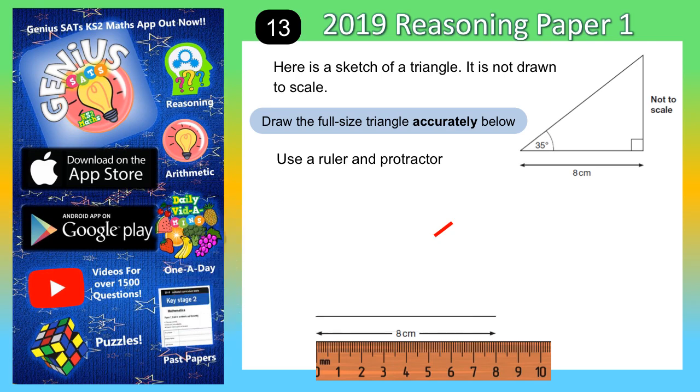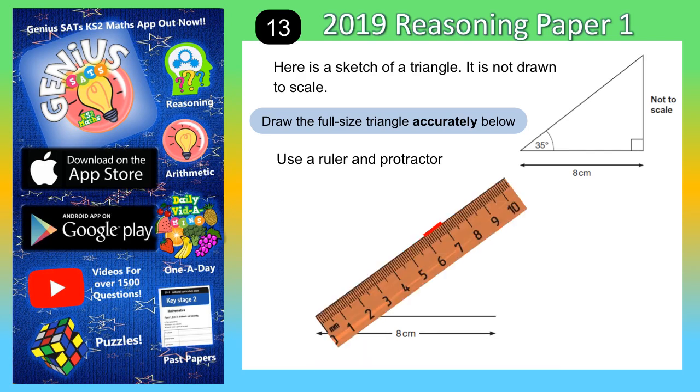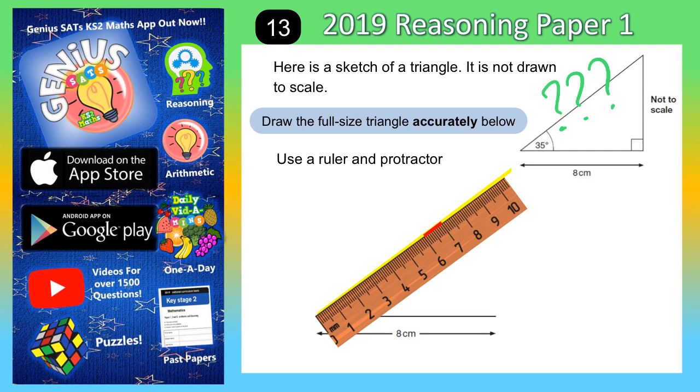The next thing we're going to do is move our protractor away. And there you can see the mark that was on 35 degrees. The next thing we do is we're going to get our ruler and put it level with the red mark. And we're going to draw a line straight through the red mark. Now we don't actually know how long this line needs to be because there are no measurements, which is why I'm not actually drawing the line a specific distance.